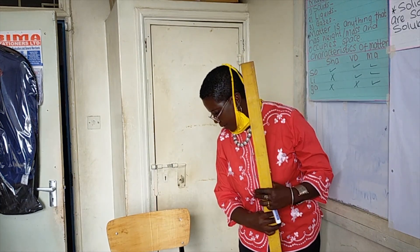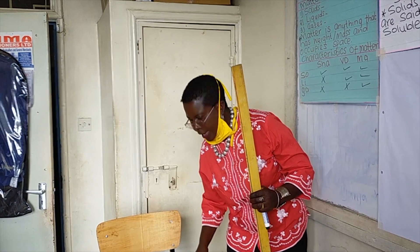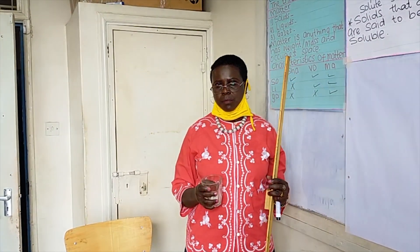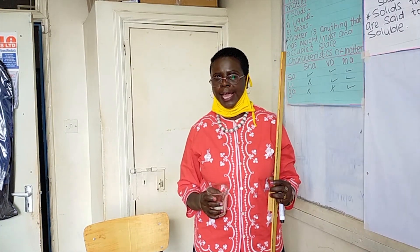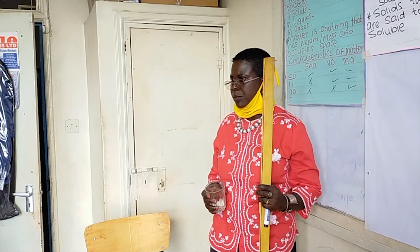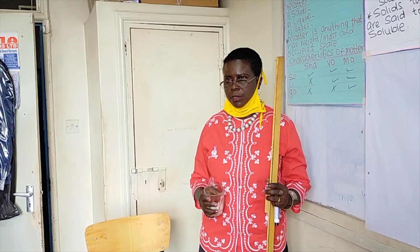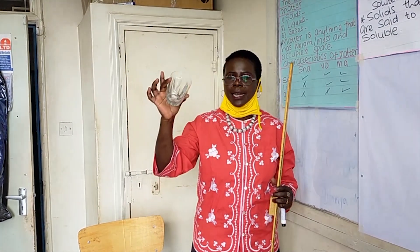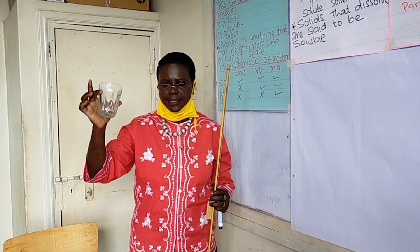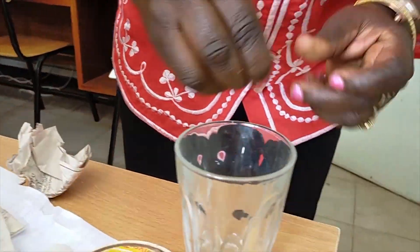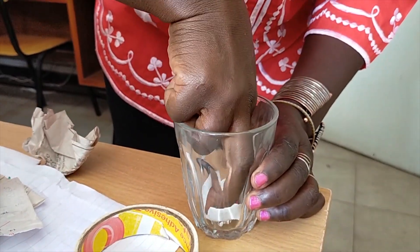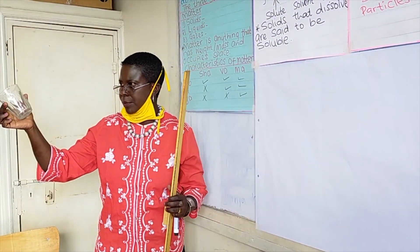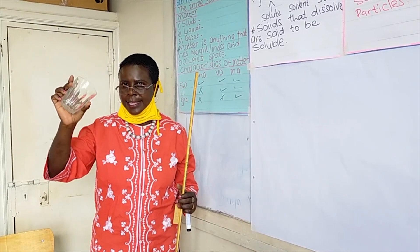Then we have matter in form of gas. For example, in this room we have a lot of air. But you cannot be able to see it because air is invisible. This glass has got air in it, but you cannot be able to see the air in the glass.